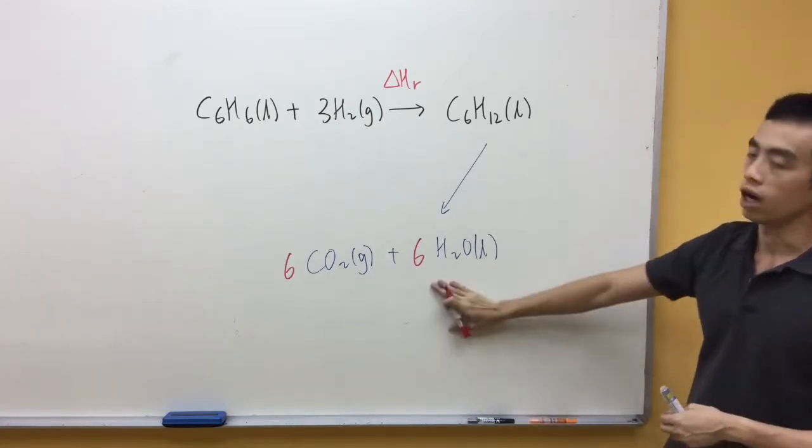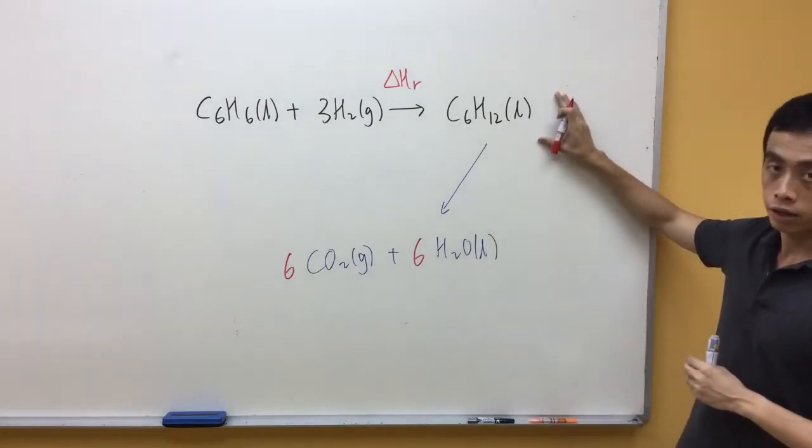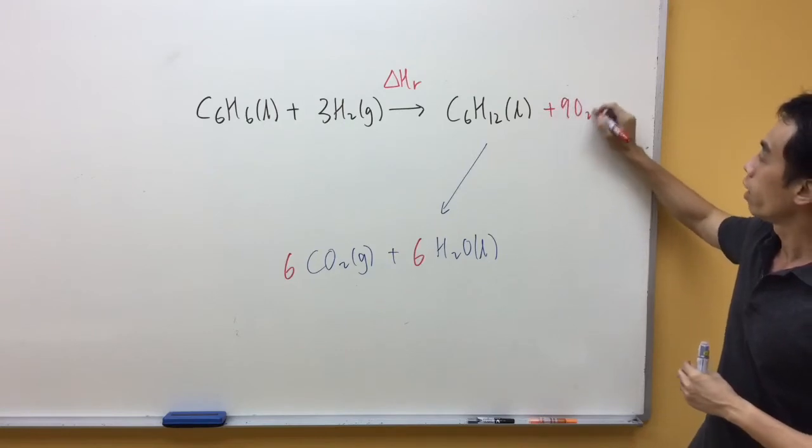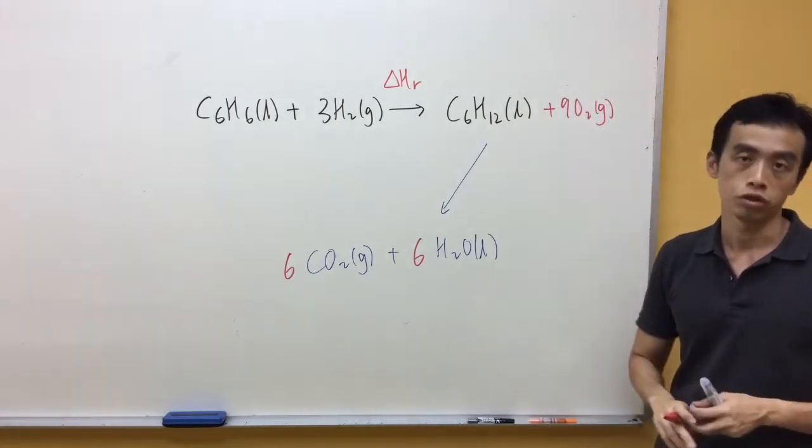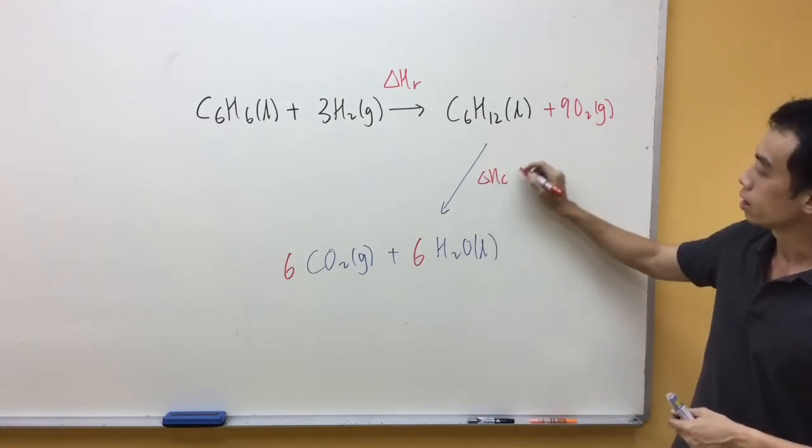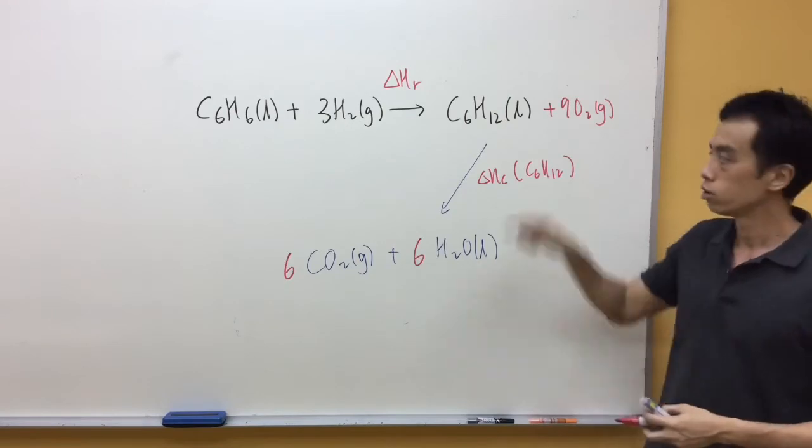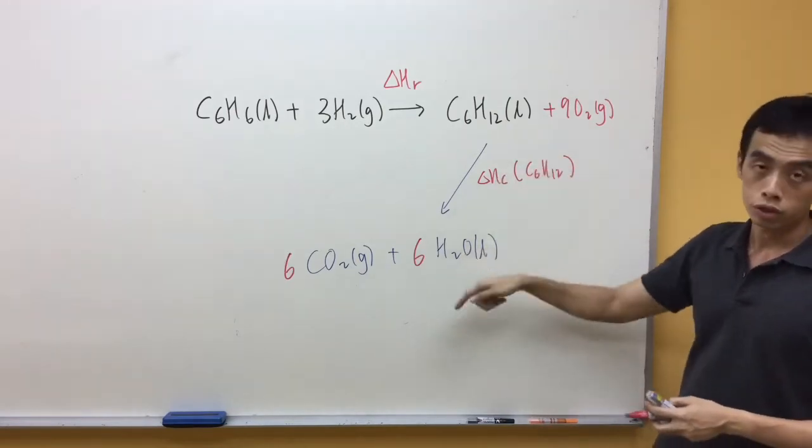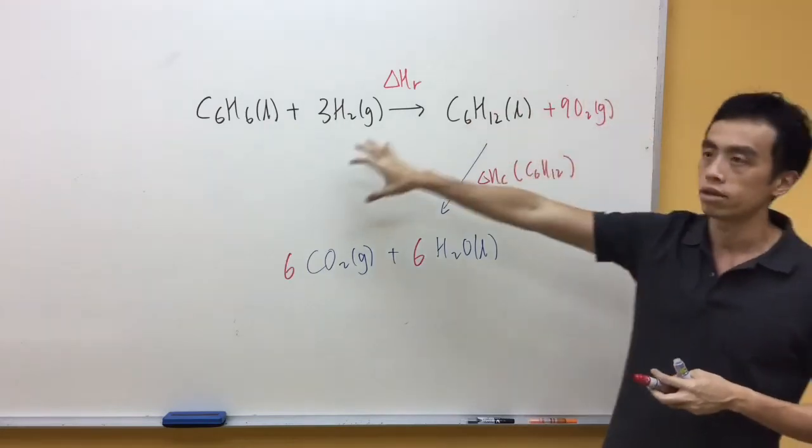So in this case, because here I have 18 oxygen, I am short of 18 oxygen here, I need to add 9O2 to balance this reaction. Then I know that this will just be the enthalpy change of combustion of C6H12. So this equation will be balanced. Once I put down my O2 on the right-hand side of the equation, then on the left-hand side, I also need to add the same number of O2 to keep the equation balanced.